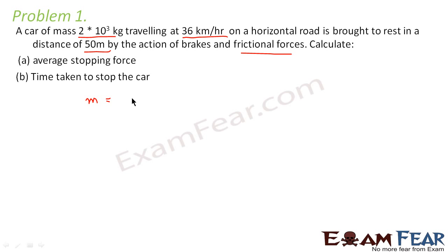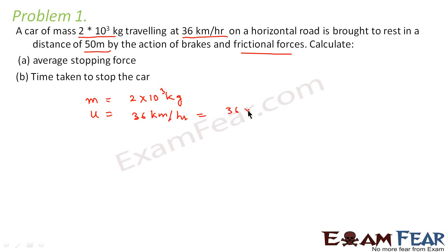We are given the mass of the car: m = 2 × 10³ kg. It is traveling at a speed of 36 km per hour, so the initial velocity u = 36 km per hour. Since we might have confusion later because of different units, let us convert it into meters per second. 36 km per hour converts to 10 meters per second. So this is the initial velocity of the car.